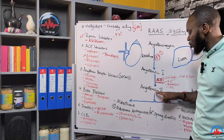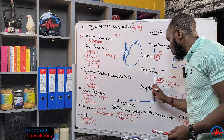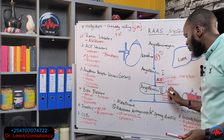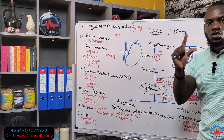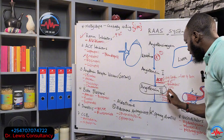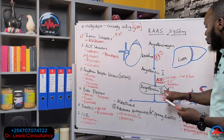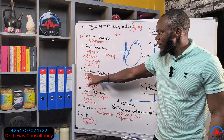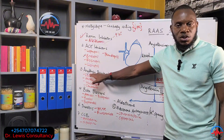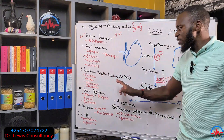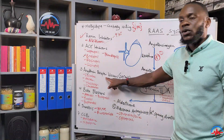We must block angiotensin 2 — this active protein — from binding to receptors, because it binds to receptors on the blood vessel wall to cause constriction and increase blood pressure. If you block the receptors that this protein binds to, blood pressure will go down. Drugs that block these receptors are called angiotensin receptor blockers. Once you block that receptor, you cause vasodilation; once you cause vasodilation, blood pressure goes down.